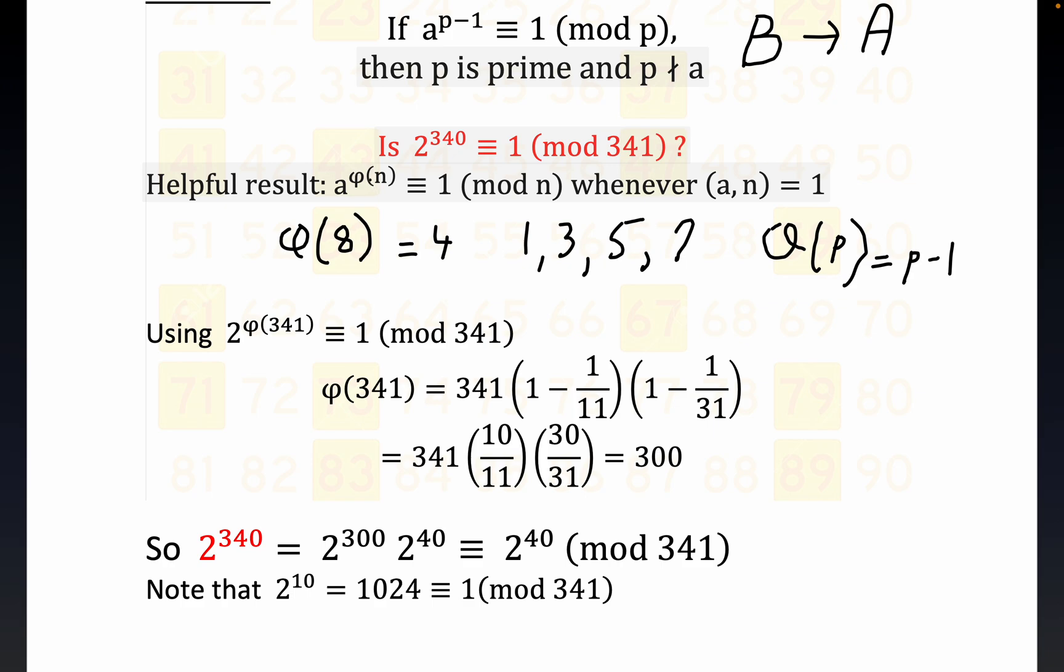Again, this is called the totient function, and it helps you to reduce congruences with large numbers in them. So we're using the fact that 2 raised to the phi of 341 is congruent to 1 mod 341. That's because 2 and 341 are relatively prime.